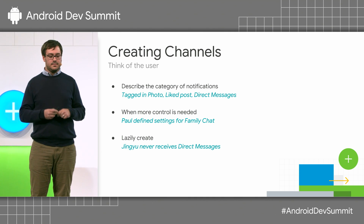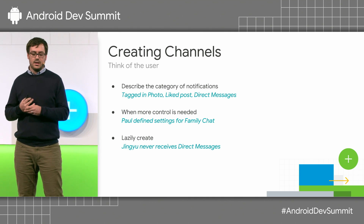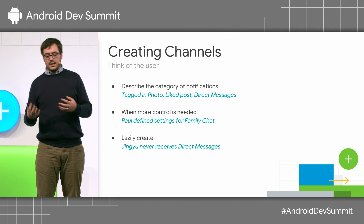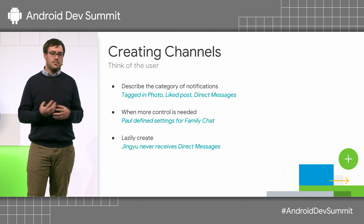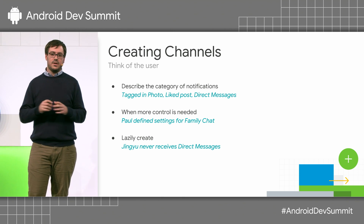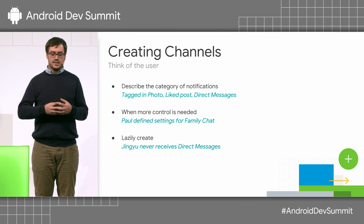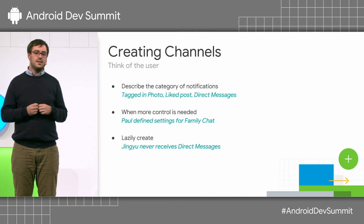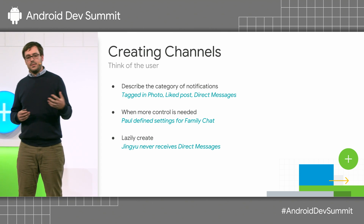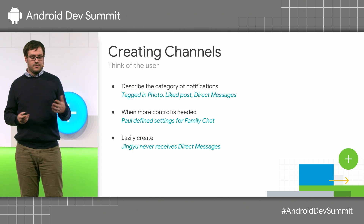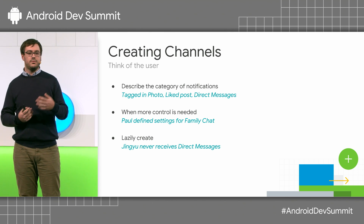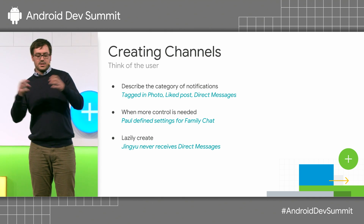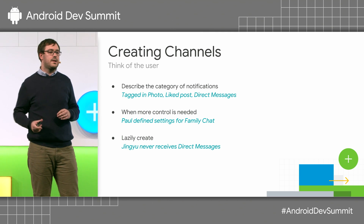Choosing your channels carefully: you really should think of the user when you create your channels, not your application or your architecture. Think of the user and how they might want to interact with your app. It's a bad idea to create notification channels around importance levels — you should group them around categories of notifications, for instance tagging in a photo or liked posts. Let the user communicate back to you how they see that type of notification. You should also think about creating channels when there's more control needed.